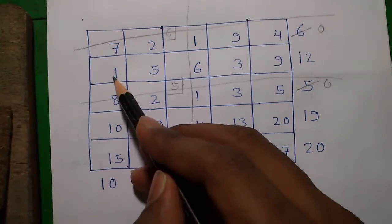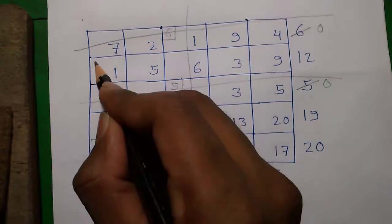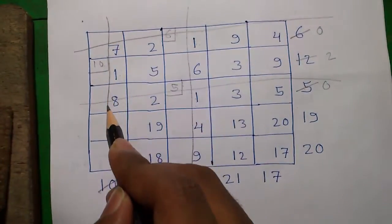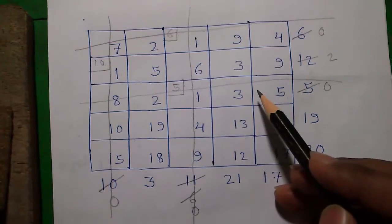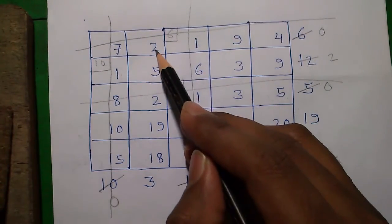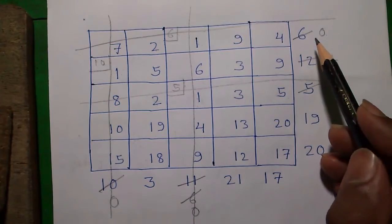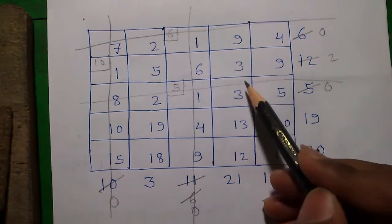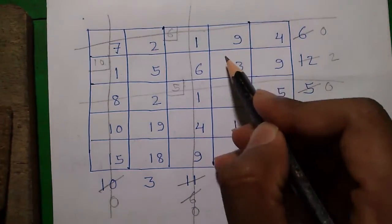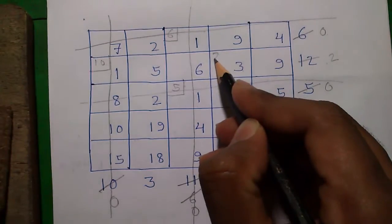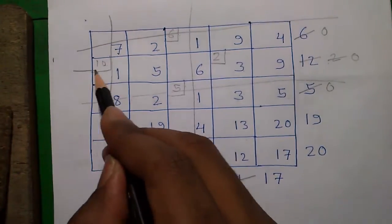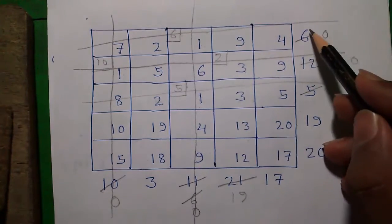Next, we return to the remaining 1s. For the cell with allocation cost 6, demand is 6 and supply is 6, so we allocate 6 — both become 0, so we strike through that row and column. Then for the next cell with cost 1, demand 10 and supply 12, we allocate 10 — demand becomes 0, supply becomes 2, so we strike through that column. The next minimum is 2, but those cells are struck through. We move to 3, and with one 3 remaining, demand is 21 and supply is 2, so we allocate 2 — supply becomes 0, demand becomes 19, and we strike through that row.